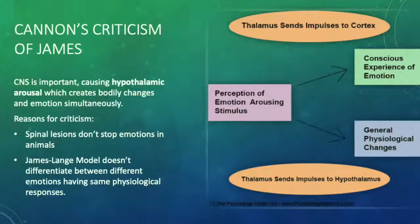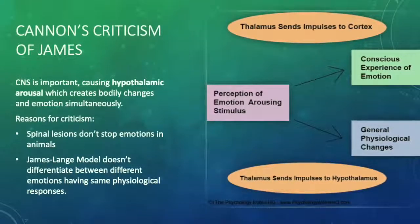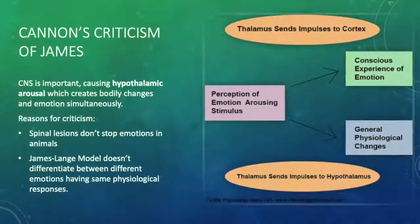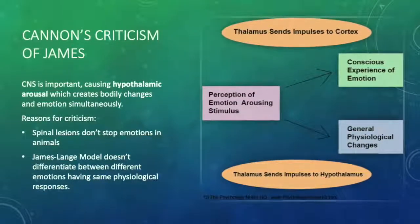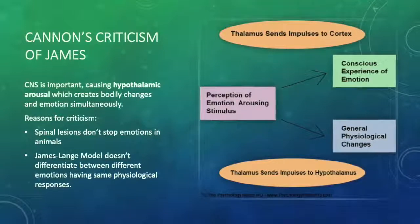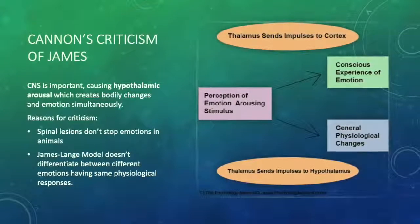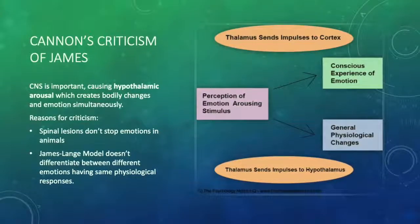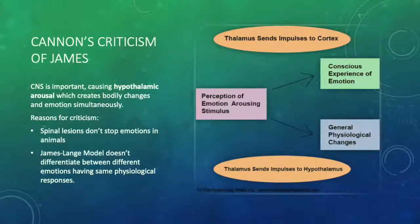Cannon's criticism of James: the central nervous system is important because it causes hypothalamic arousal, which creates bodily changes and emotion simultaneously. Reasons for this criticism include how previous experiments showed, in the spinal lesions of animals, that animals continue to display emotions despite having a spinal lesion. James-Lange's model also doesn't differentiate between different emotions despite them occurring from the same physiological arousal. So instead, Cannon postulates hypothalamic arousal that causes both bodily experiences and emotions.